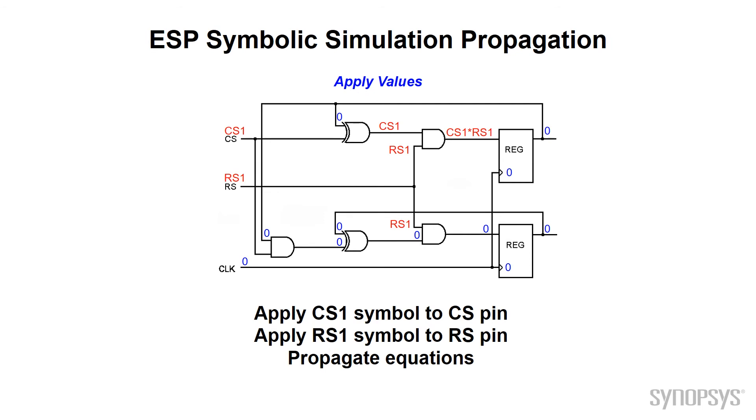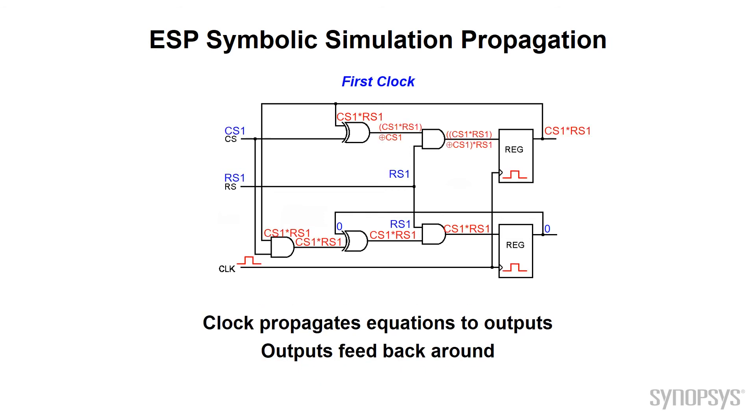Now let's start applying symbols. Set the CS input to CS1 and the RS input to RS1. Step simulation, we see the values propagated to the internal nodes as equations. Simple so far.